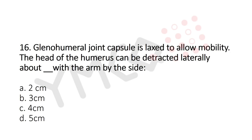Question 16: The glenohumeral joint capsule is lax to allow mobility; the head of the humerus can be distracted laterally with the arm by the side by — option A: 2 cm; option B: 3 cm; option C: 4 cm; option D: 5 cm. The answer is option A: 2 cm.